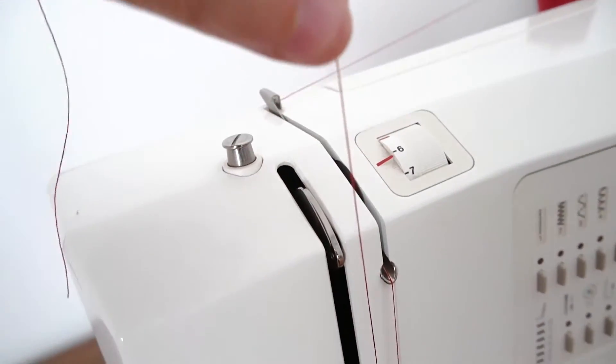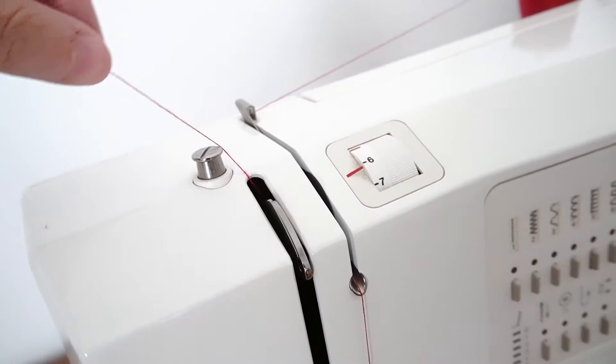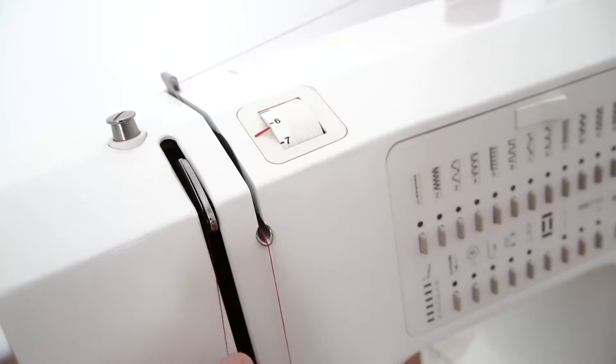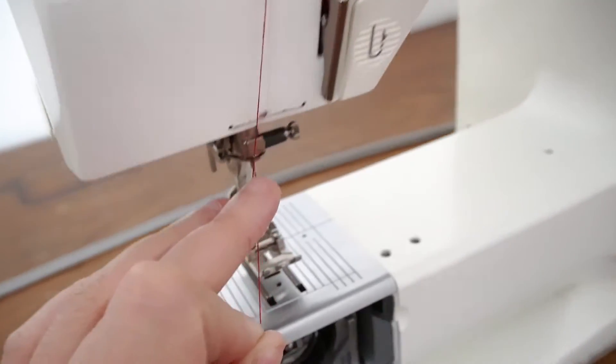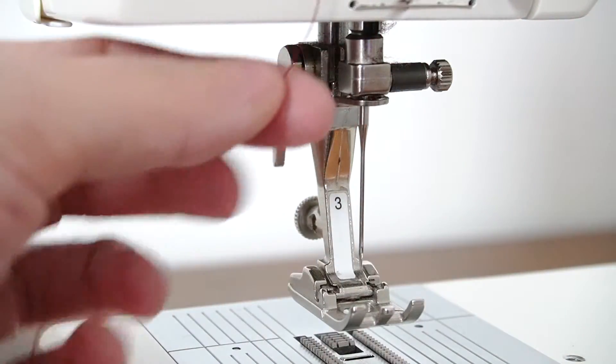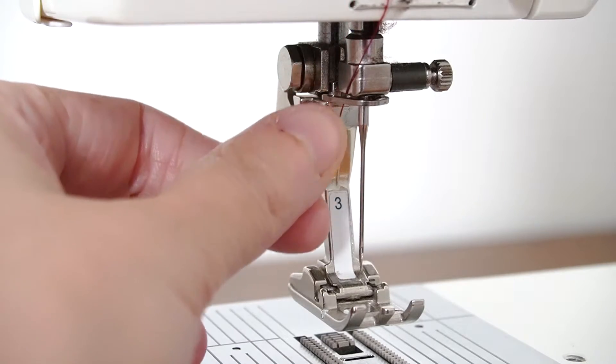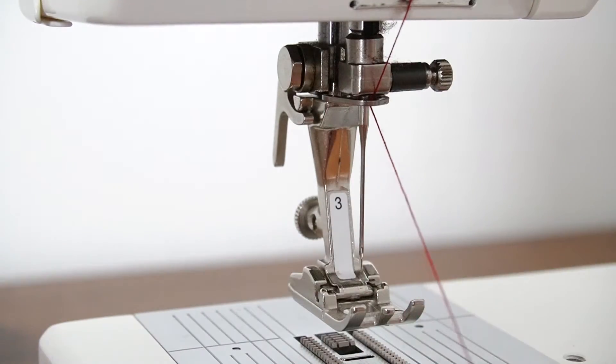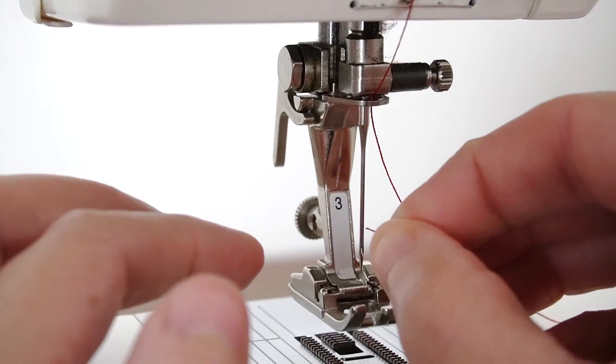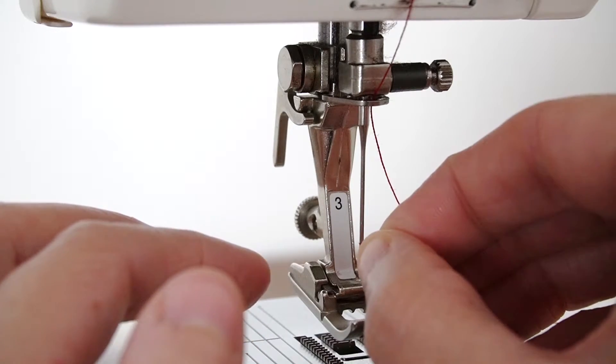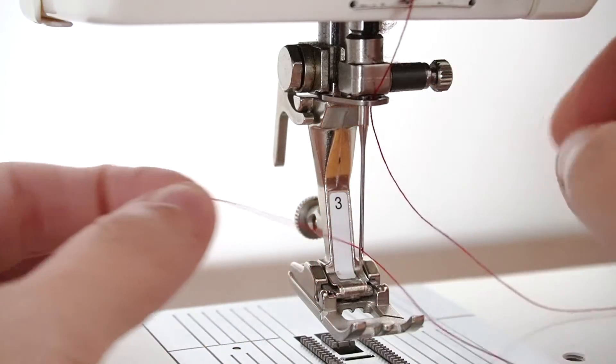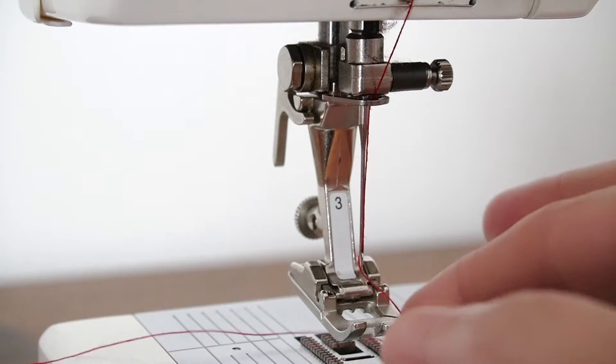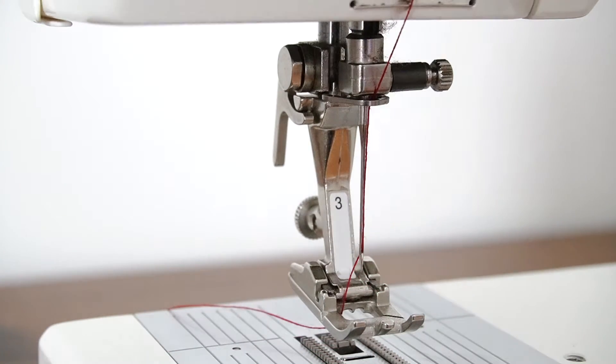So you're going to take your thread and go from the right side around to the left side and then bring it back down. And from there you pull the thread down and then you need to secure it over this ledge. Sometimes it's on the left, sometimes it's on the right to get it in. Mine is on the left here. And then you will thread the needle. Pull about four or five inches out, secure it under the presser foot, and now we're ready to thread the bobbin.